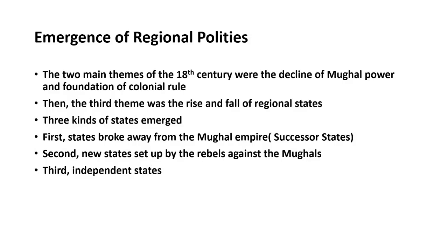With regard to the regional powers, there were three different types of states that emerged in the 18th century. The first group of states had earlier formed part of the Mughal Empire — these came to be known as successor states. They drifted away from the Mughal Empire and asserted independence. The second group came to be known as new states, set up following rebellions against the imperial Mughals.